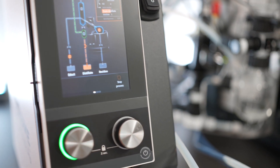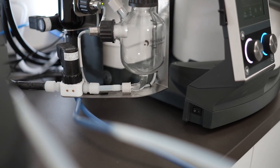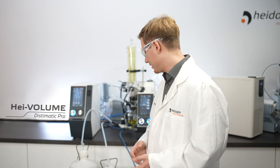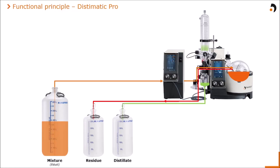As soon as the vessel is completely filled, the Distymatic Pro separates the vessel from the rest of the system. The evaporation itself is not interrupted, but the system aerates the vessel and afterwards increases the pressure inside only this component to push the collected solvent out into a collection vessel or can. For most applications the amount of solvent is significantly higher than the amount of residue, so this step will be repeated several times.